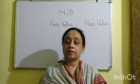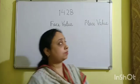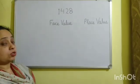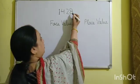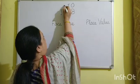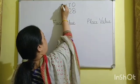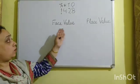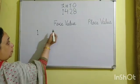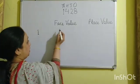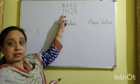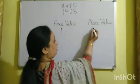Now I am going to explain place value and face value through some examples. Suppose we have the number 1428. I am going to give the place value to the digits: ones, tens, hundreds, and thousands. The face value of 1 is 1, and since 1 is in the thousands place, its place value is 1000.